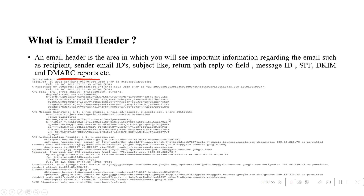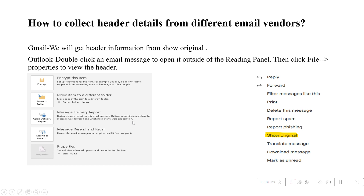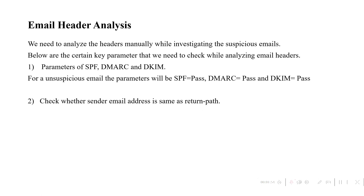Email headers gather important information such as SPF, DMARC, and DKIM — which are part of email authentication — as well as subject details, return path, and recipient details. To retrieve the email header, in Gmail you click 'Show Original,' and in Outlook you go to Properties under File. SOC analysts will typically do manual analysis, though tools like MX Toolbox can also be used.